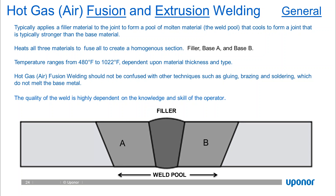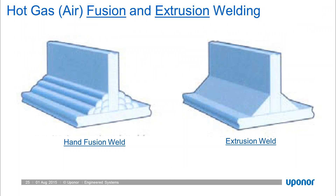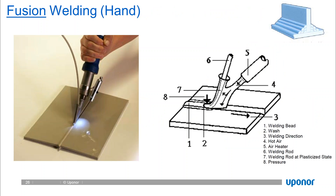The quality of the weld is highly dependent on the training, knowledge, and skill of the operator, reinforcing the need for a quality control program. Fusion welding typically refers to hand fusion welding, which requires multiple passes of a single rod. Extrusion welding is a single pass of a molten extruded material. In extrusion welding, you can see the welding bead being applied through the head of the system, which has a shoe at the head and applies the welding material. Hot air is fed through the handle to heat both the welding rod and the two base materials to the prescribed temperature.